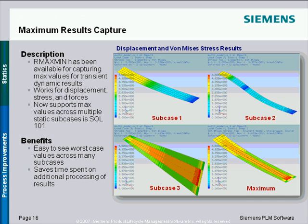Another enhancement was maximum results capture. This capability originally worked for transient analyses — over a complete transient analysis it would capture the maximum result that occurred anywhere in that transient into one contour plot. We extended this concept to static analysis, so if you have multiple subcases, we capture the maximum result from all subcases. In this example, from subcases one, two, and three, we show the maximum value — near the base of the cantilever the maximum comes from subcase one, the maximum stress value came from subcase two, and out near the tip the maximum stress value came from subcase three.